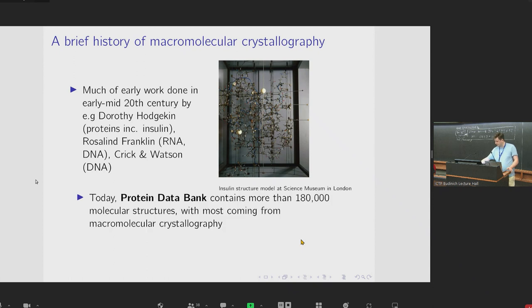Today, there is the protein data bank, which contains more than 180,000 molecular structures, many of which were found via macromolecular crystallography. And this resource has enabled many modern accomplishments, including the recent AlphaFold model from DeepMind, which is now being used to predict the structure of proteins.